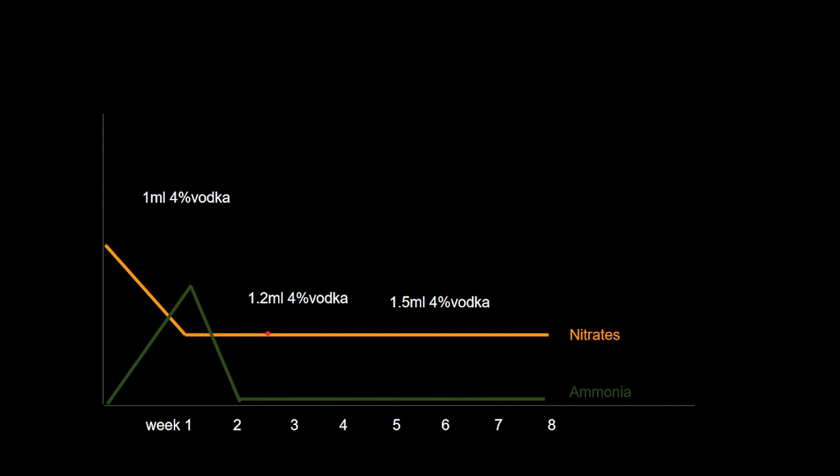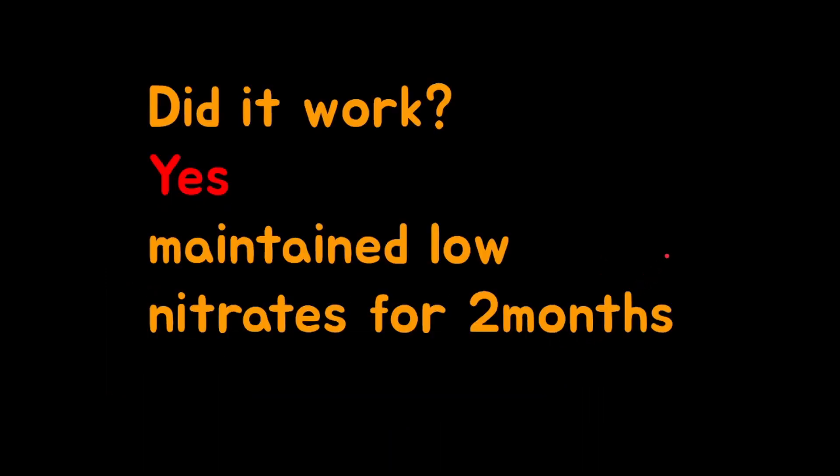Nitrate levels also stayed stable. So at week three, I increased the dose of vodka to 1.2 milliliters. I wanted to see if I could add extra vodka to reduce the nitrates further. That did not work. At week six, I increased the vodka to 1.5 milliliters and that still didn't do much to the nitrates. So in any case, the nitrate stayed stable throughout the experiment and the addition of vodka was able to lower the nitrates, but it had a side effect of causing a brief ammonia peak. But in any case, did it work? Yes. It maintained low nitrates stable for two months. So with the addition of vodka, I was able to increase the amount of food that the no water change tank was able to handle.